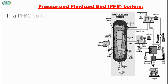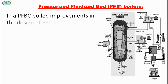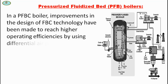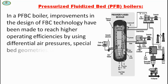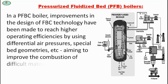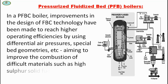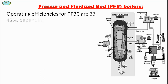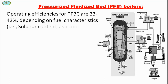In pressurized fluidized bed boilers, improvements in the design of FBC technology have been made to reach higher operating efficiencies by using differential air pressure, spatial band geometry, and other methods, aiming to improve the combustion of difficult materials such as high sulfur shale refuse and biomass. Operating efficiencies for PFBC are 33 to 42%, depending on fuel characteristics such as sulfur content, ash content, and calorific value.